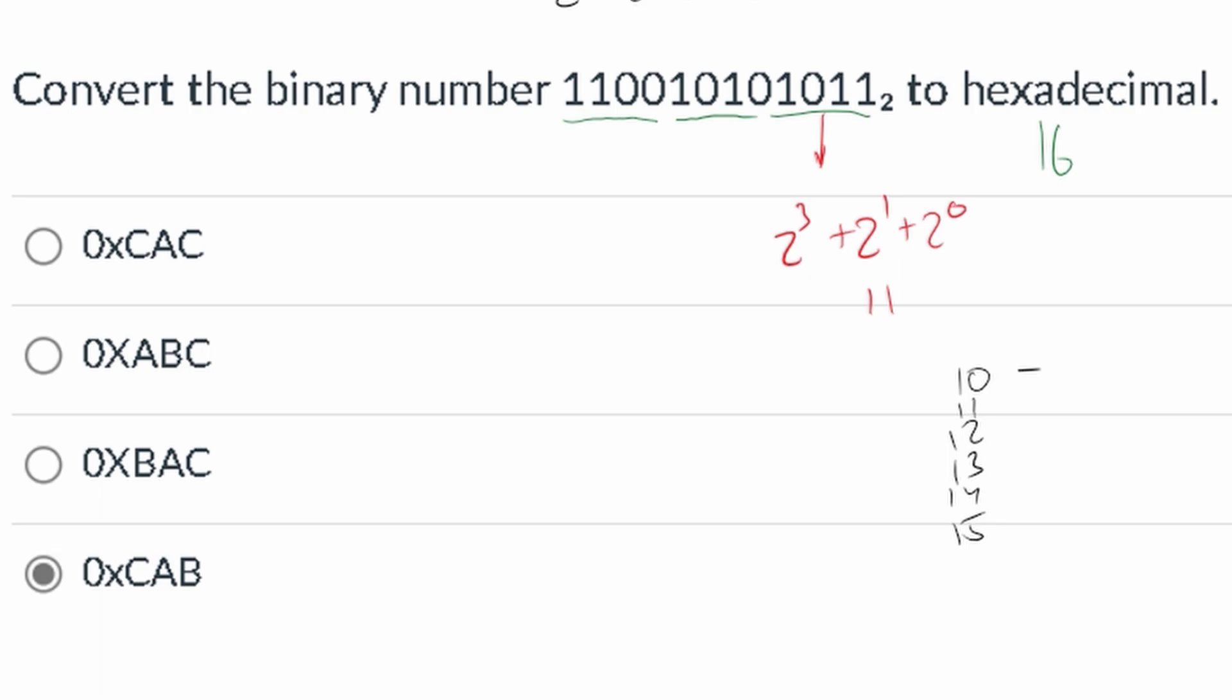Now, with this one, a 10 is going to be an A. The 11 is going to be a B, 12 is C, 13 is D, 14 is E, and 15 is F. So with this knowledge, we can say that our 11 is going to be a B. And that's how we are going to get this B right here.